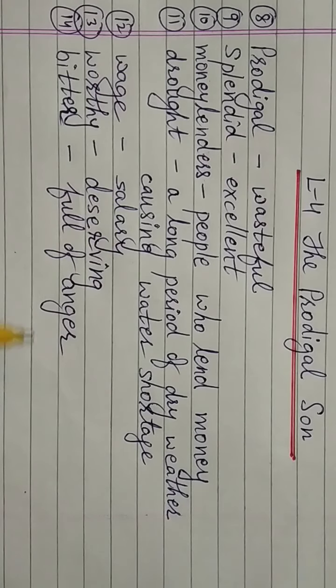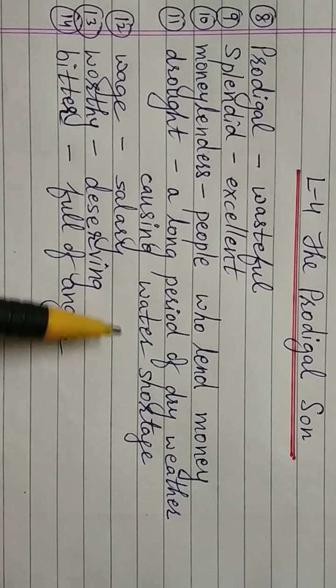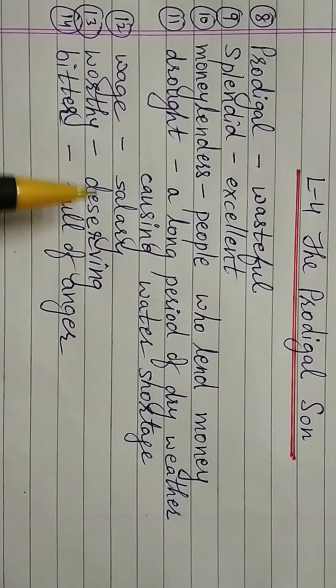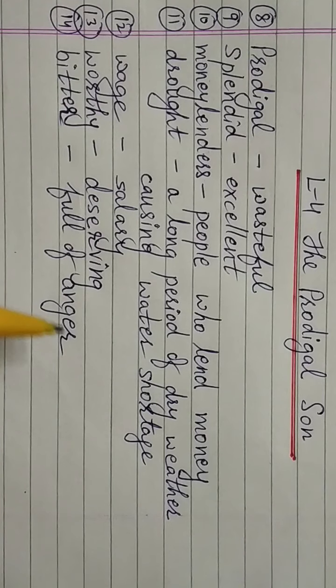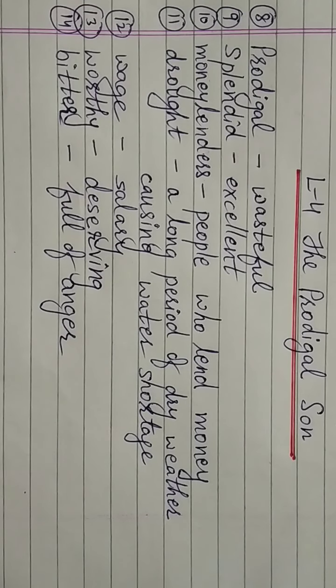Drought means a long period of dry weather causing water shortage. Wage means salary. Worthy means deserving. Bitter means full of anger. Write these word meanings in your English notebook.